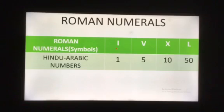In class 4, we will learn Roman numerals up to 50 only. So we will use only 4 symbols and those symbols are I is equal to 1, V is equal to 5, X is equal to 10, and L is equal to 50.